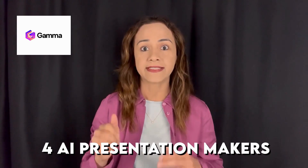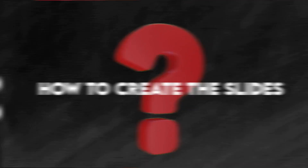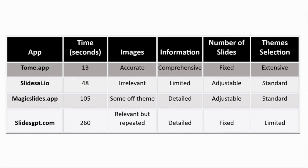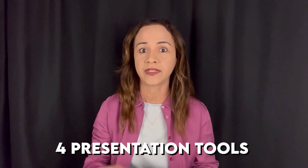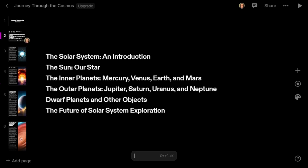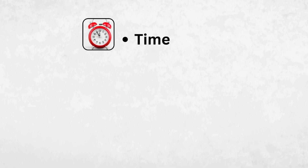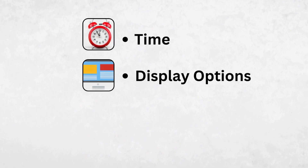In this video I walk you through four AI presentation makers: Gamma, Simplified, Canva, and ChatGPT. For each tool I'll provide step-by-step demonstrations on how to create the slides. We are also revisiting four other presentation tools we previously explored: Tom, Slides AI, Slides GBT, and Magic Slides. I'll update you on how these tools have evolved over the past four months. We'll do a detailed comparison of all eight tools, evaluating them based on the time it takes to create a presentation, the available display options, and the quality of the content and images they produce.